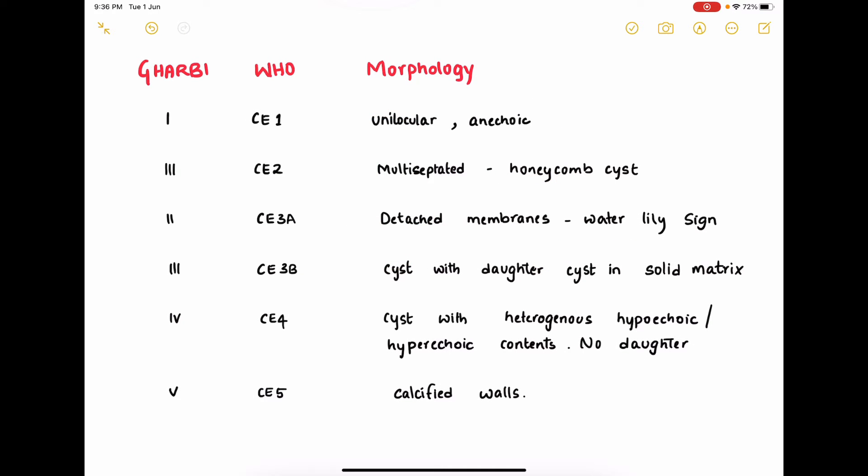Now let's look at the classification of the hydatid cyst. There is the WHO and Gharbi classification — I'll give stress to the WHO classification while the corresponding Gharbi classification is also given. Type CE1 is a simple unilocular and anechoic cyst. CE2 is a multiloculated, honeycomb cyst. CE3A is when the membranes are detached, showing the water lily sign.